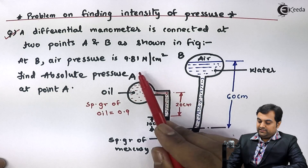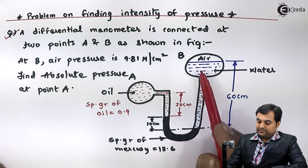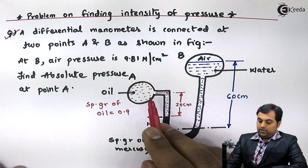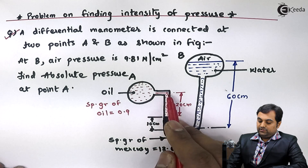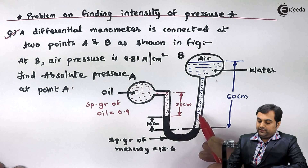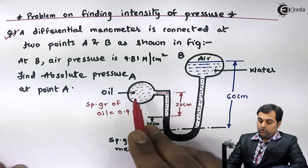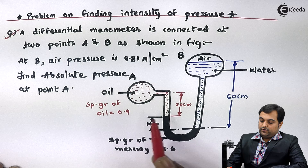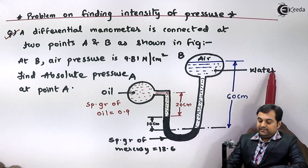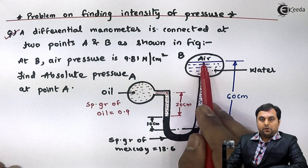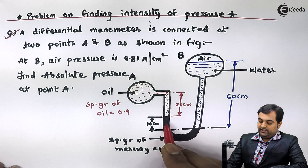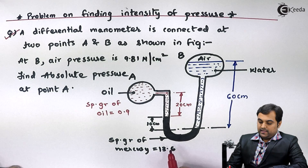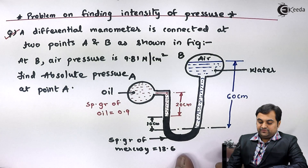As we can see in the diagram, at A and B there are two different pipes and to those pipes a differential U-tube manometer is connected. On the left hand side we have oil whose specific gravity is 0.9. On the right hand side we have water as well as air. We also have mercury whose specific gravity is 13.6.